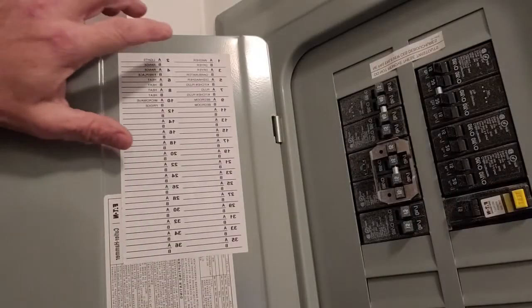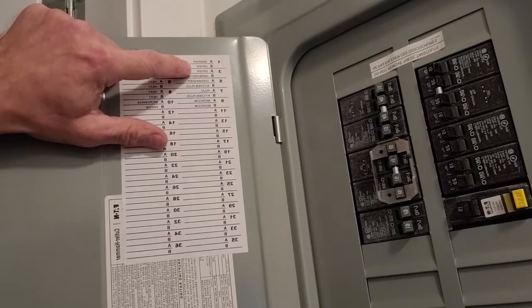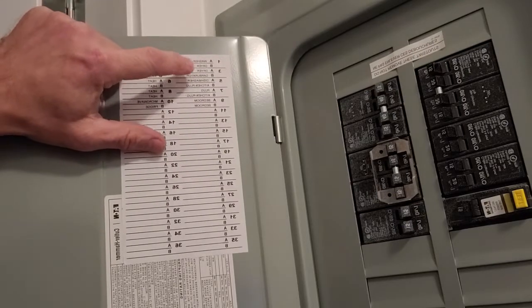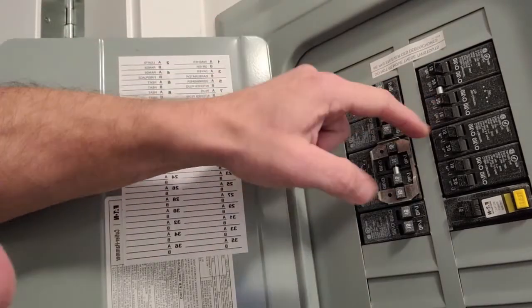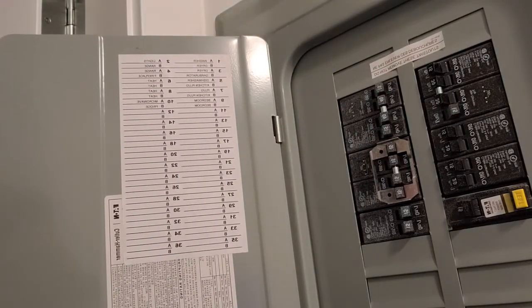At the panel, all you need to do is read the legend. So here we have washer, dryer, dryer, garburator. So this one would represent this breaker right here. Turn this off and now the power is gone and we'll be safe to work on this.